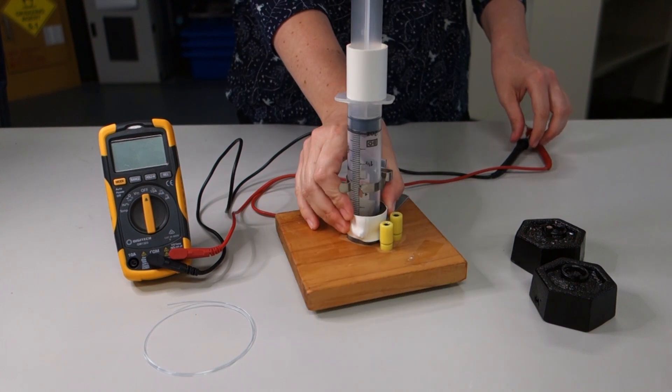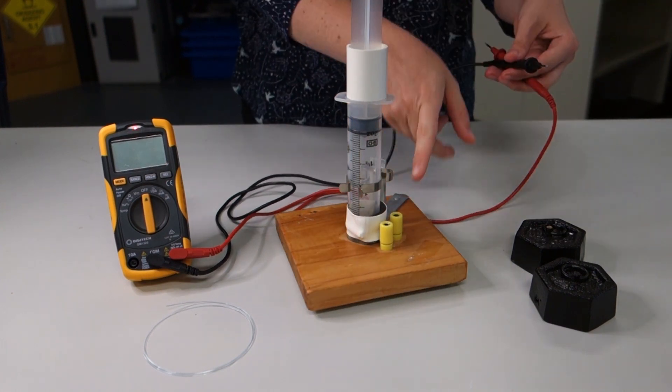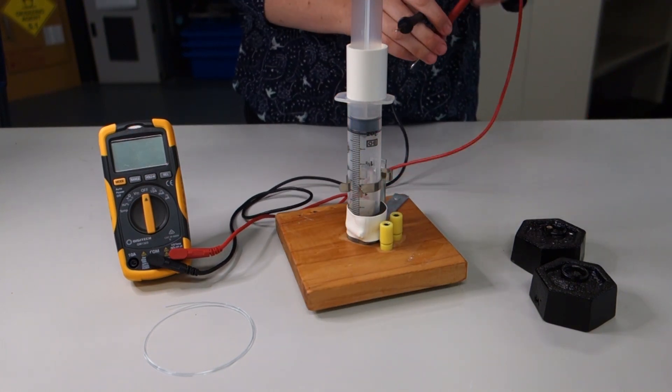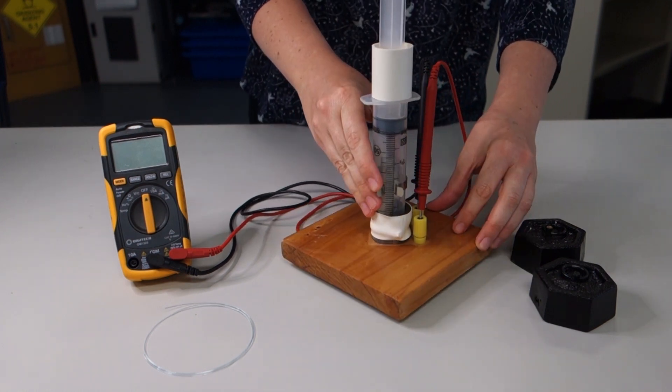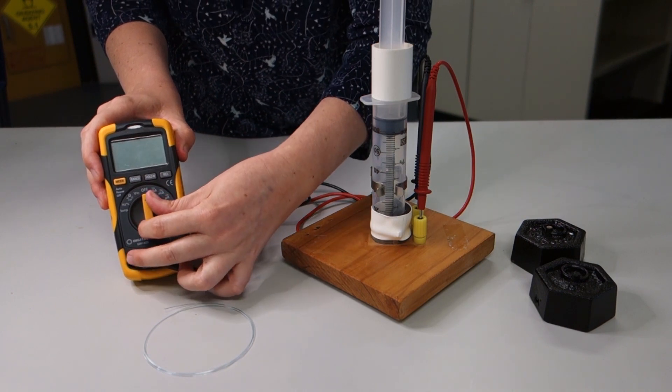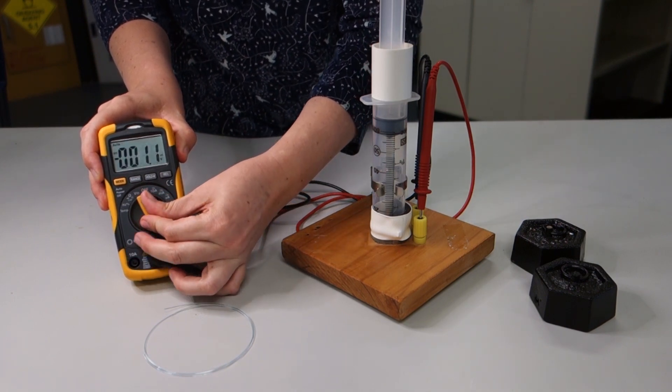Connect your multimeter to the two terminals at the base of the syringe. Turn on your multimeter to record ohms.